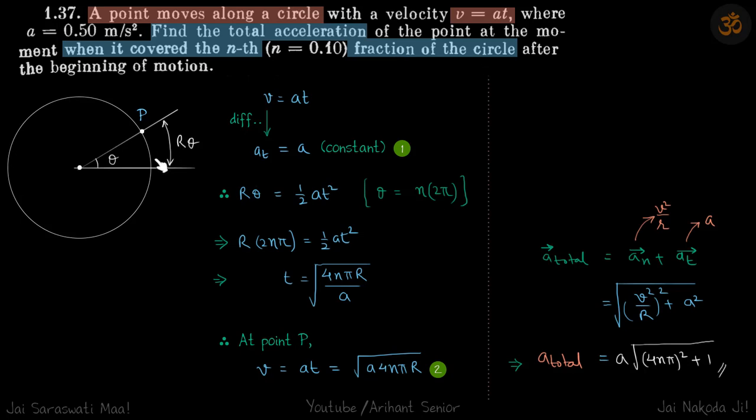Let's say in the nth portion of the circle it covers an angle theta, and this distance becomes arc length, that is r theta. We need to find total acceleration, so that will be the normal acceleration as well as tangential acceleration.